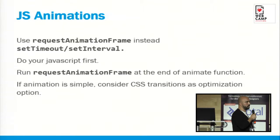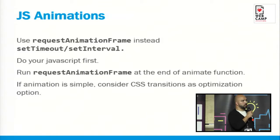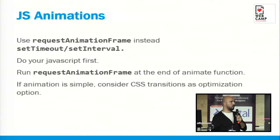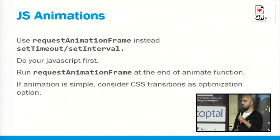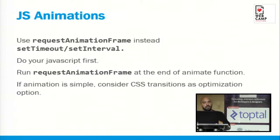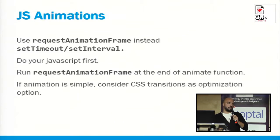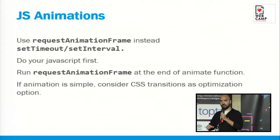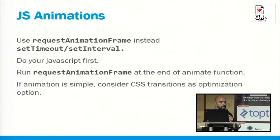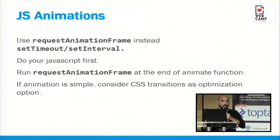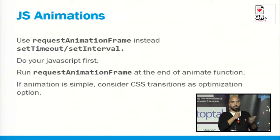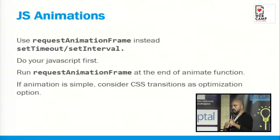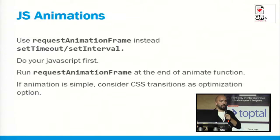So for animations, if you use JavaScript, use requestAnimationFrame — you can run your JavaScript first, and after that do all style and layout changes. And if the animation is a simple one, like a transition where your object has to go from right to left, you can use CSS transitions as an optimization option.